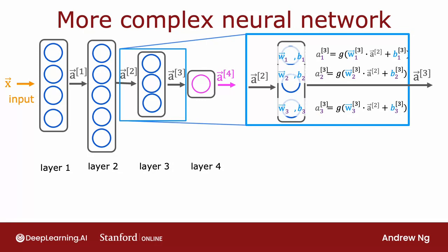If it has three neurons, or we call it three hidden units, then it has parameters w1b1, w2b2, and w3b3, and it computes a1 equals sigmoid of w1 dot product with this input to the layer, plus b1, and it computes a2 equals sigmoid of w2 dot product with, again, a2, the input to the layer, plus b2, and so on, to get a3. And then the output of this layer is a vector comprising a1, a2, and a3.